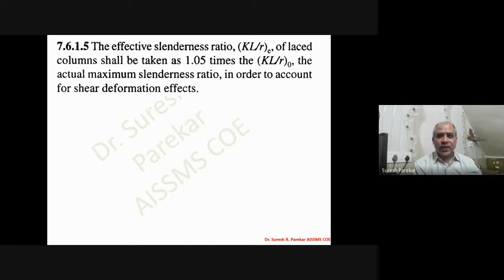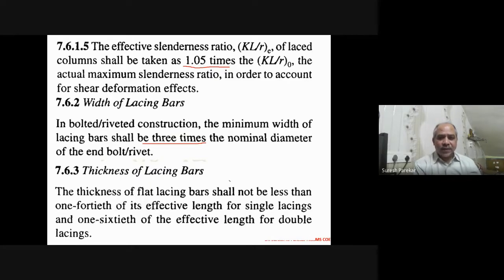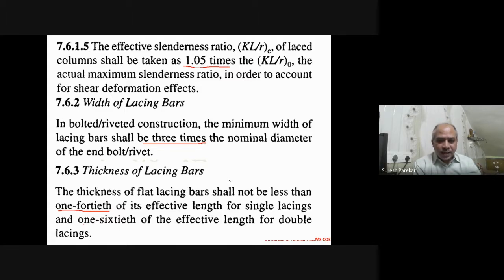The effective slenderness ratio is taken as 1.05 times the maximum slenderness ratio for the column. The width of the lacing bar is three times the nominal diameter of the bolt (not the bar). For thickness of lacing bars, here we have the key difference: for single lacing it is 1/40 of its effective length, and for double lacing it is 1/60 of its effective length.